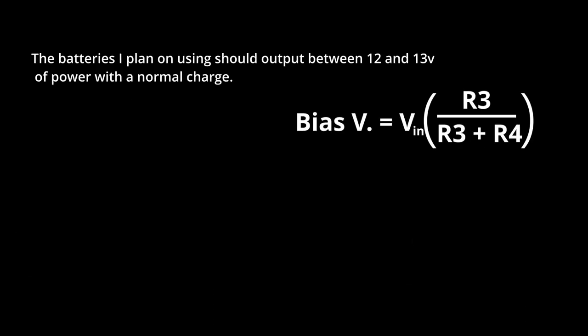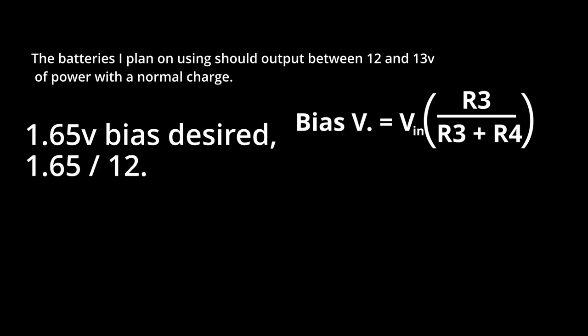The batteries I am using will output between 12 and 13 volts of power if the charge is healthy. Let's take the 1.65 volt target that we want and divide it by 12.5, giving us 0.132. This tells us that we want R3 divided by R3 plus R4 to be roughly 0.13 in order to introduce 1.65 volts of bias.